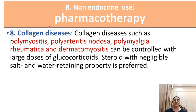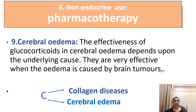Collagen diseases like polymyositis, polyarteritis nodosa, polymyalgia rheumatica, and dermatomyositis can all be controlled with large doses of glucocorticoids. Steroids with negligible salt and water retention properties are preferred. In cerebral edema, the effectiveness of glucocorticoids depends on the underlying cause; they are very effective when edema is caused by a brain tumor. 'C' in the mnemonic stands for collagen disease and cerebral edema.